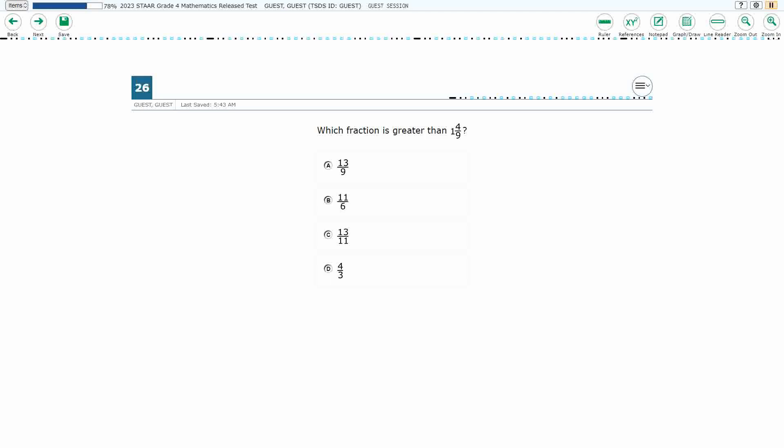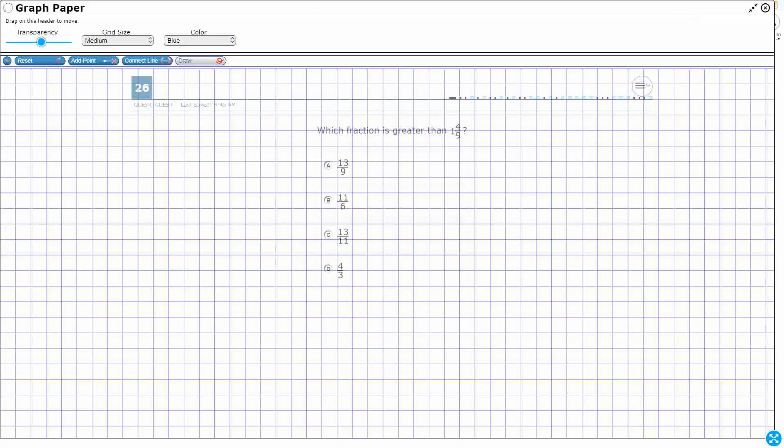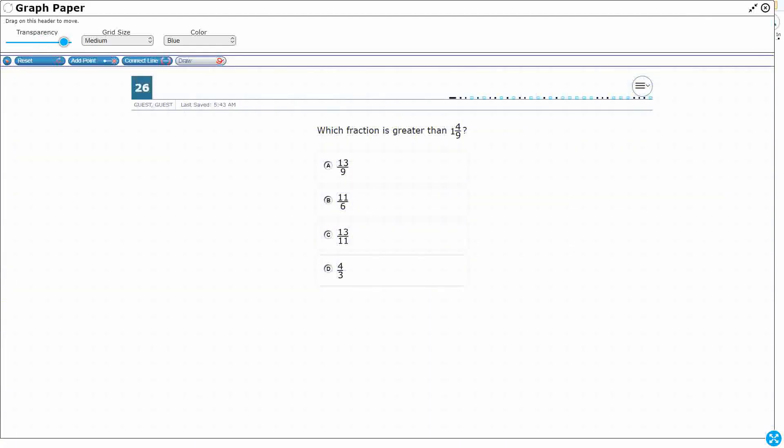All right, so we are comparing fractions because we need to find a fraction greater than 1 and 4 ninths. Now one thing about that is that that is a, or it needs to be an improper fraction. That'd be helpful because everything else is an improper fraction. We have a mixed number here. So let's change this into an improper fraction.